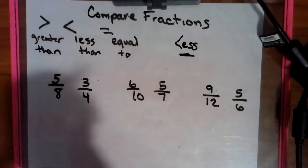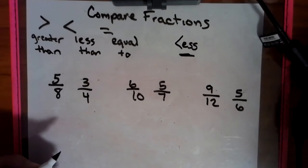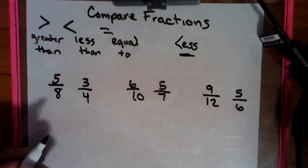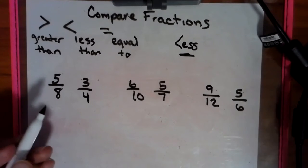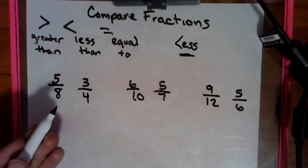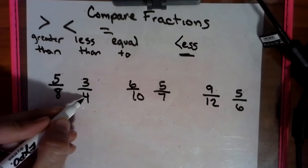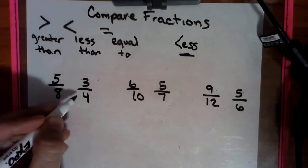I'm going to show you a pretty cool shortcut way with numerators and denominators — how to compare fractions if they don't have common denominators. Obviously, if they had the common denominator already, we could easily compare the two fractions. But we take the denominator of one and go to the opposite numerator.